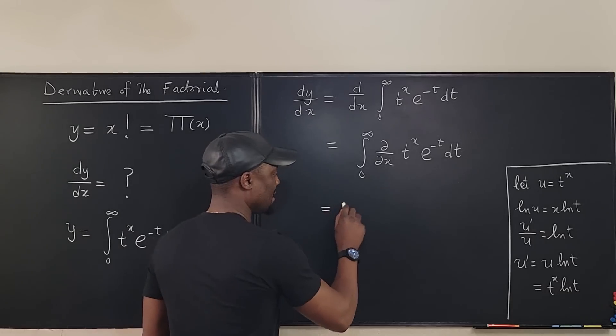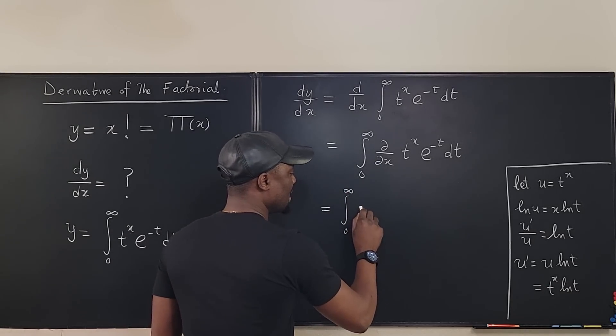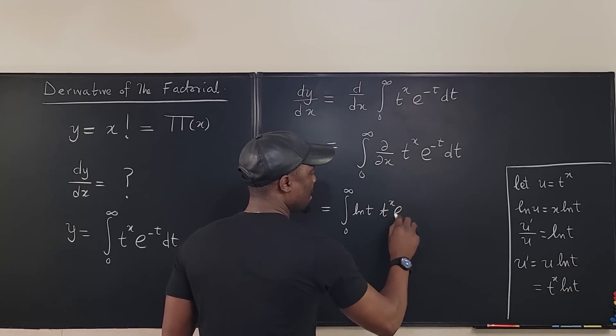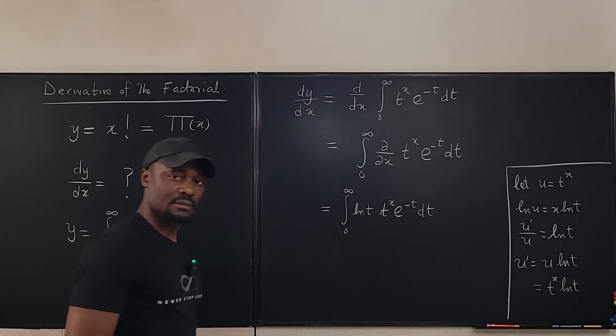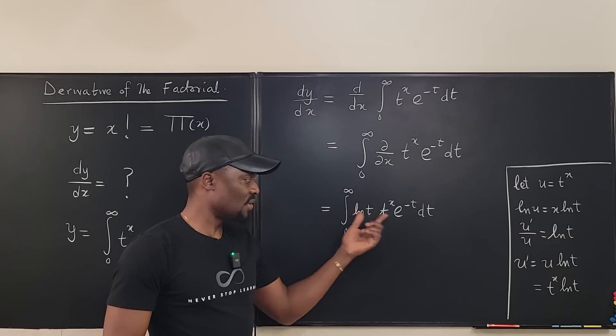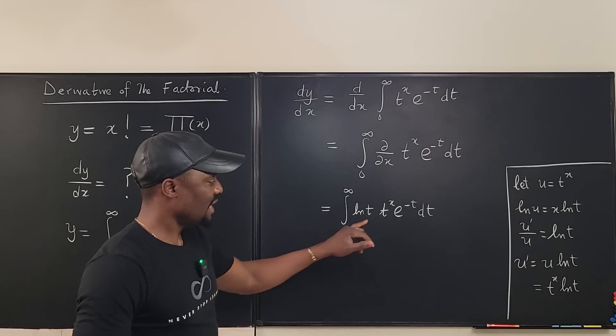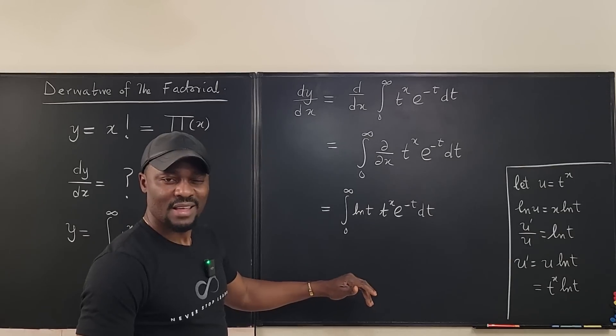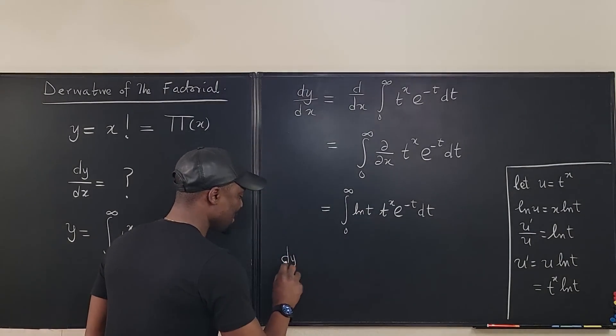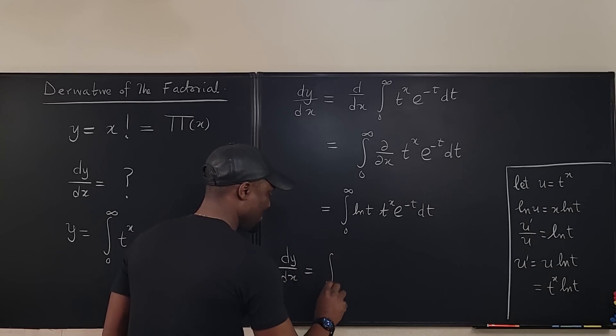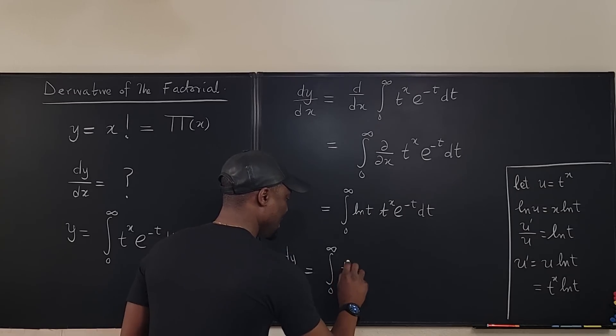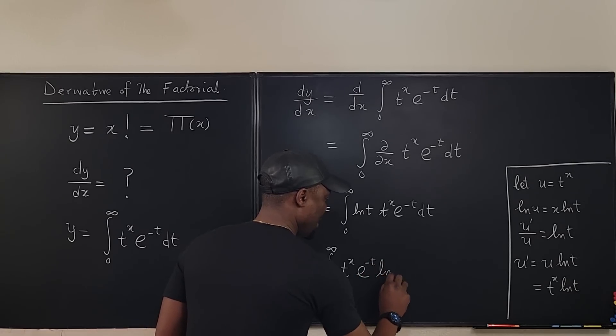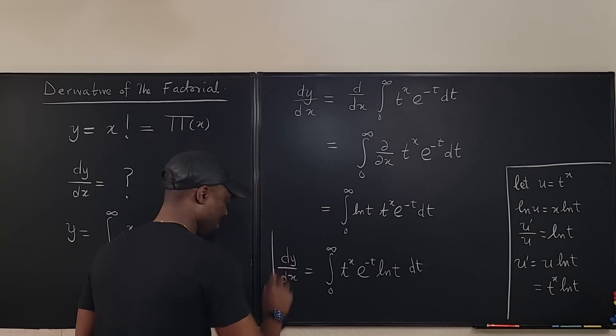So my next line is basically the integral from 0 to infinity of, I'm going to bring the ln t to this side. It's going to be ln t and I have t to the x e to the negative t dt. Well, you see, this is still a variable and this looks confusing. So let's look for the best way to write it. I think the best way to write this is to say that dy/dx will be equal to the integral from 0 to infinity of t to the x e to the negative t ln t dt. This is the derivative